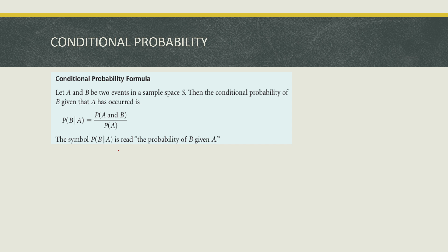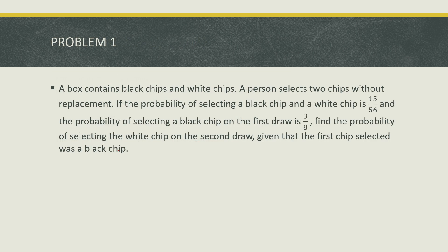Problem number 1: A box contains black chips and white chips. A person selects two chips without replacement. If the probability of selecting a black chip and a white chip is 15/56, and the probability of selecting a black chip on the first draw is 3/8, find the probability of selecting a white chip on the second draw given that the first chip selected was a black chip.